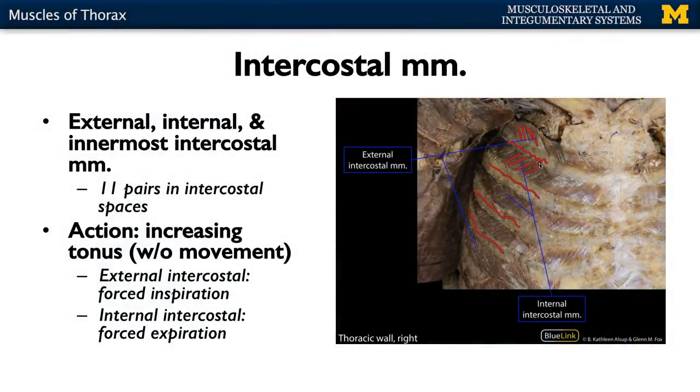Think about what's deep to the thorax — you have the lungs right there, so you need that additional protection for those vital organs. These muscles play a big role in increasing stability and tone in this region, but they don't play a big role in active movement like flexion or extension, because they are not attached to the spinal column.